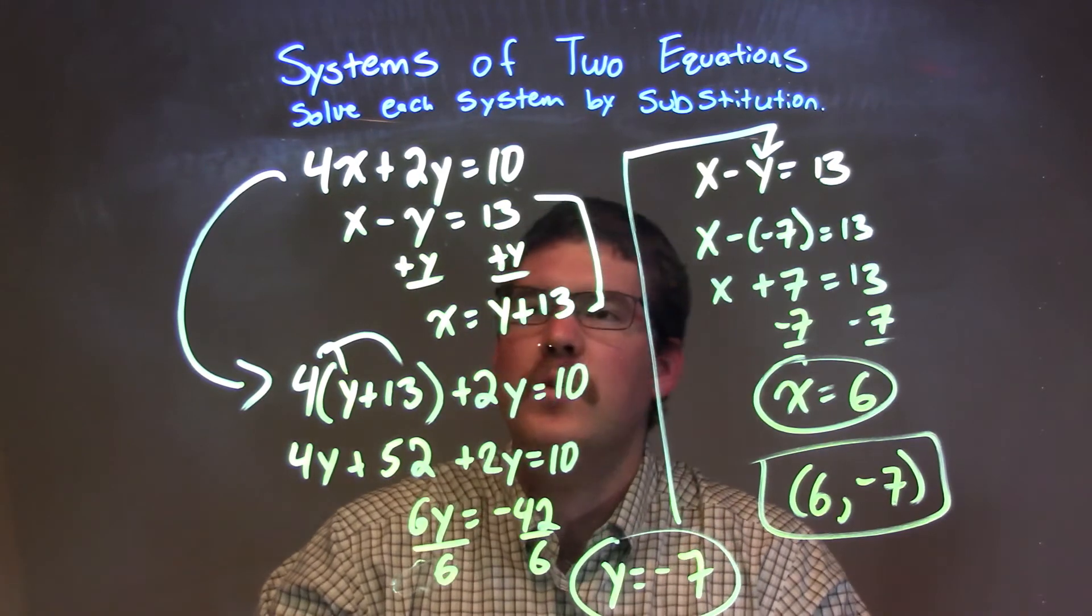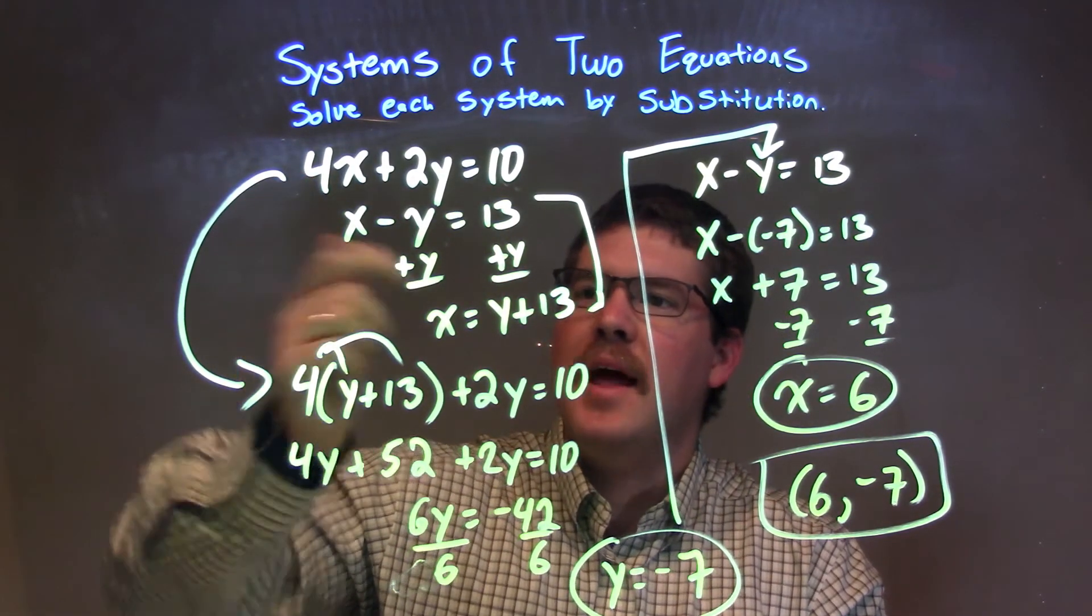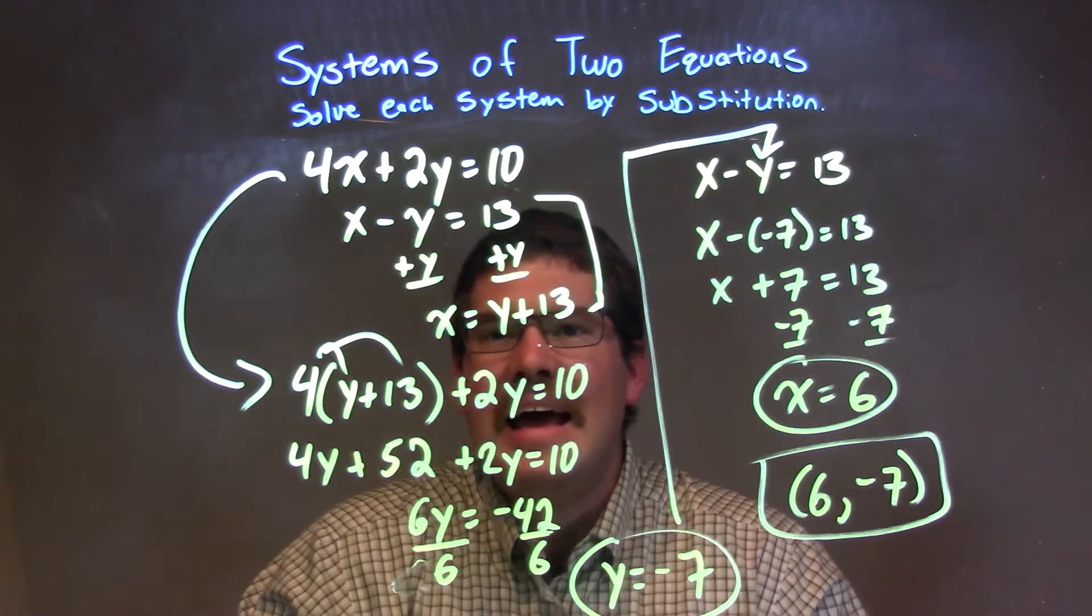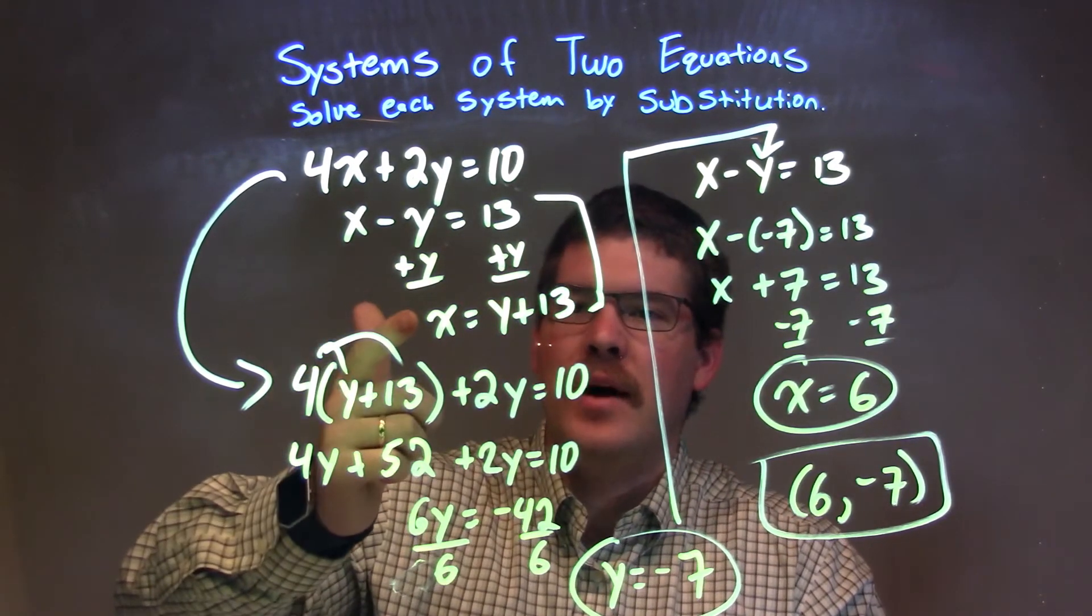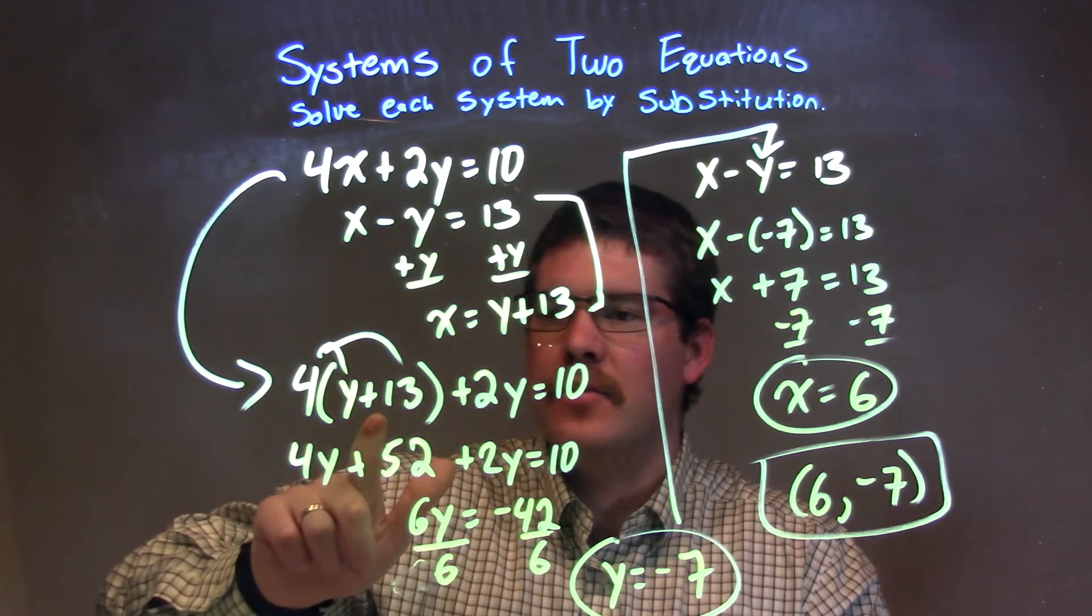So let's recap. We're given our two equations: 4x plus 2y equals 10, and x minus y equals 13. I got the second equation to have x by itself. I then plugged y plus 13 in for x in the first equation, right there.